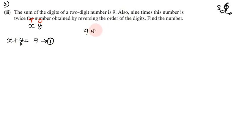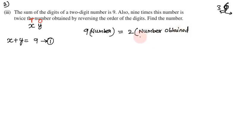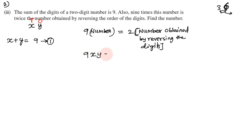Second: 9 times this number equals twice the number obtained by reversing the digits. So 9 times xy equals 2 times yx. Now you can express this number.